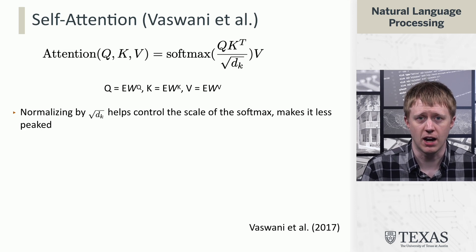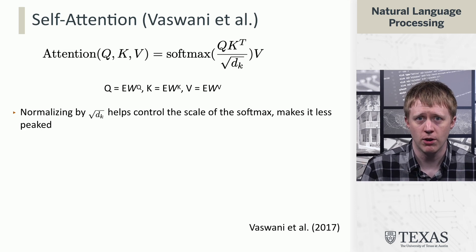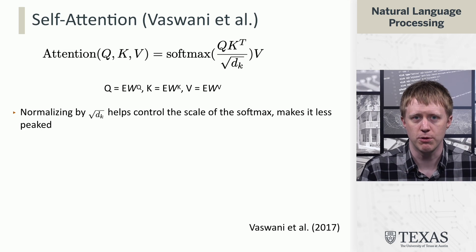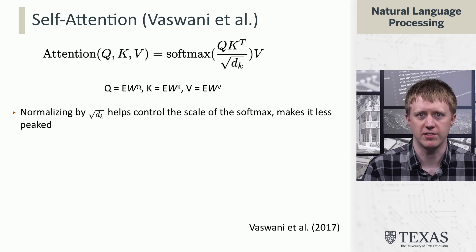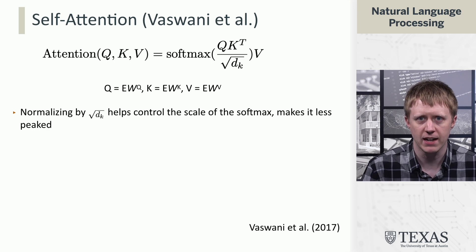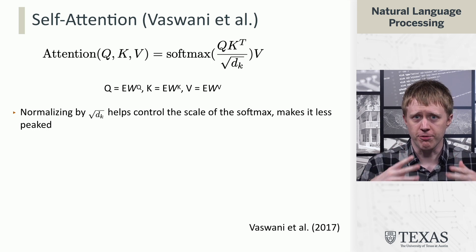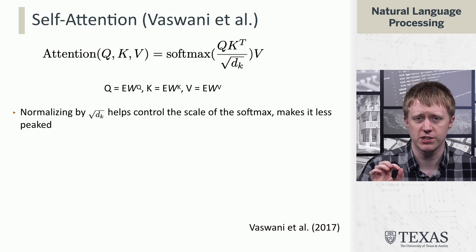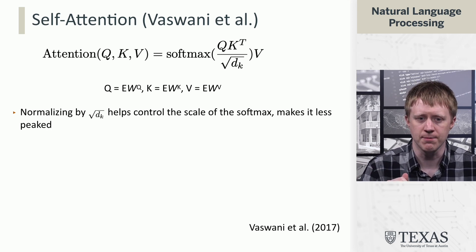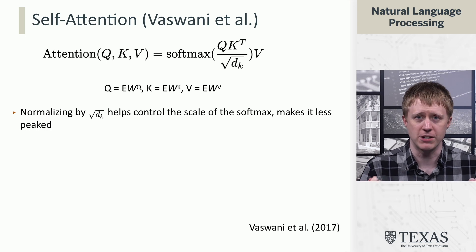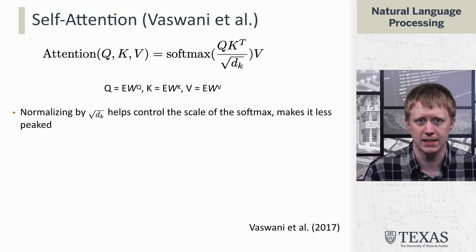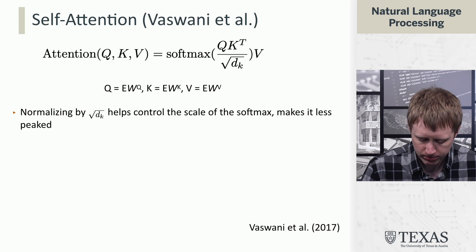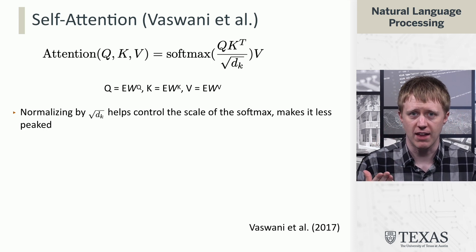What that basically gives us is the formula that is given in Vaswani et al. for the attention computation. Their formula involves Q, K, and V, which are computed based on the input embeddings, multiplying by these parameter matrices WQ, WK, and WV. We take this softmax of Q times K transpose, and then there's one extra step where they divide and rescale everything by square root of d_k, which is the vector dimension. It basically just has the effect of making the softmax less peaked.